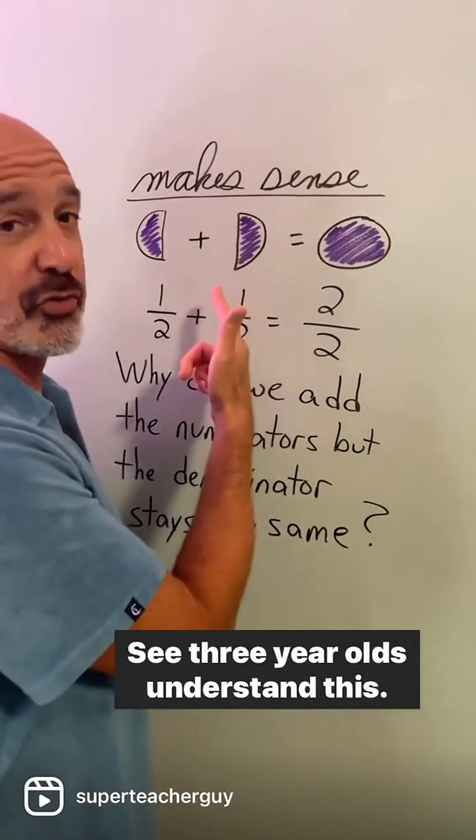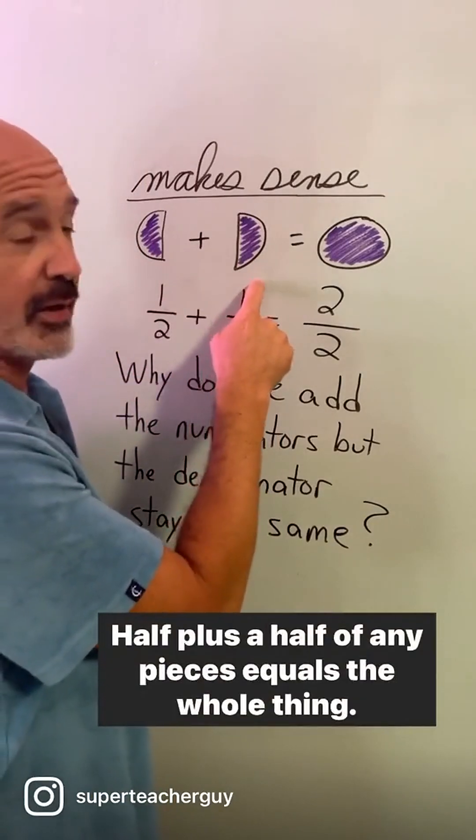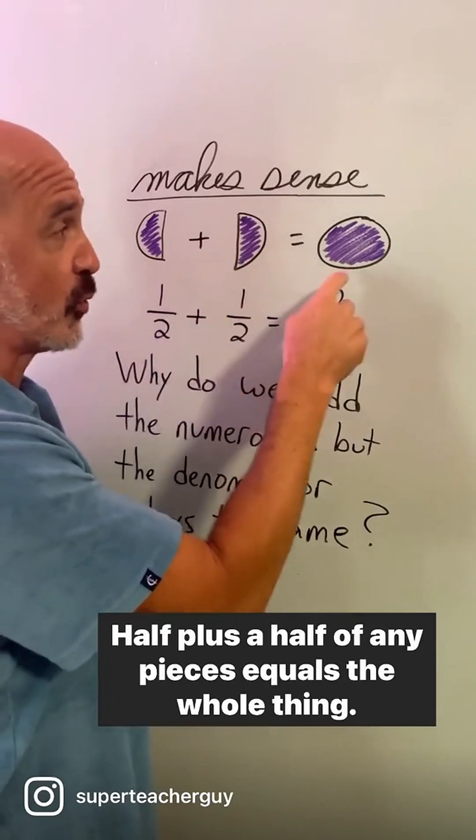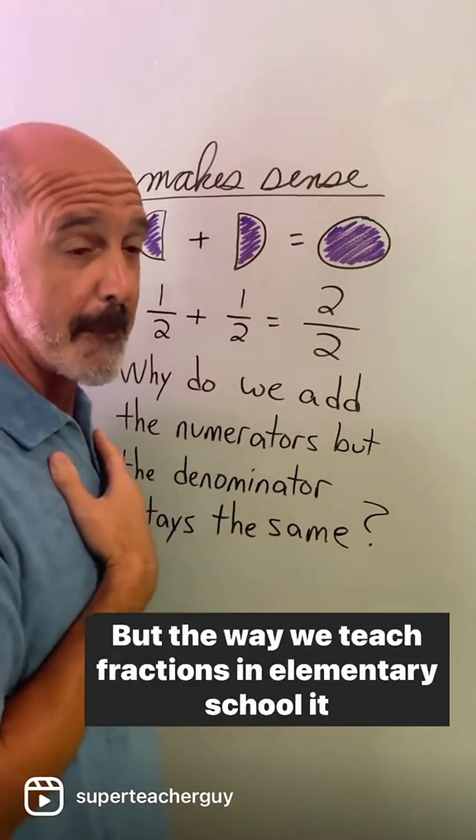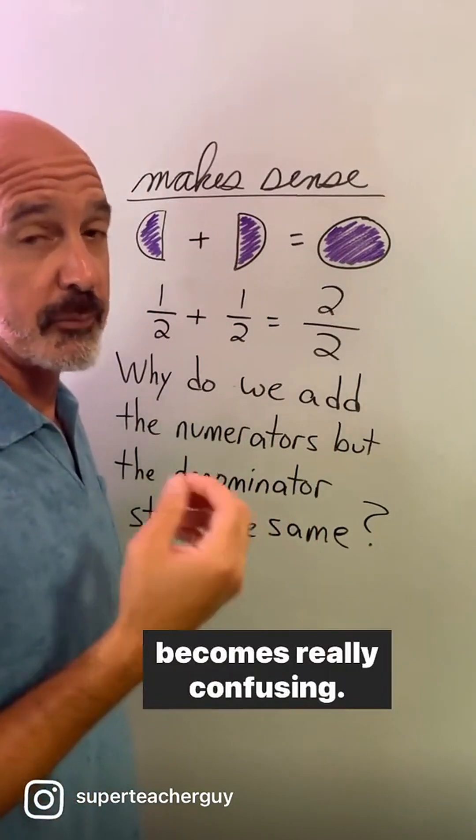See, three-year-olds understand this. Half plus a half of any pieces equals the whole thing, but the way we teach fractions in elementary school it becomes really confusing.